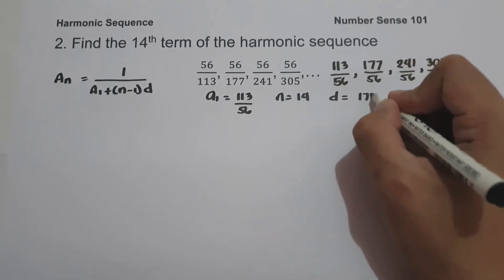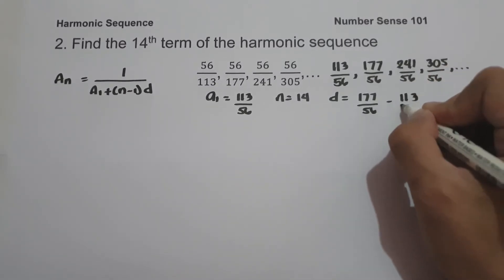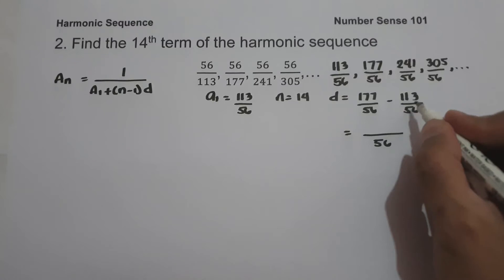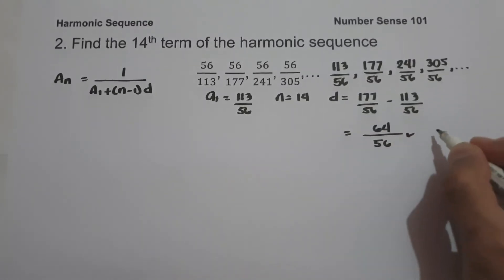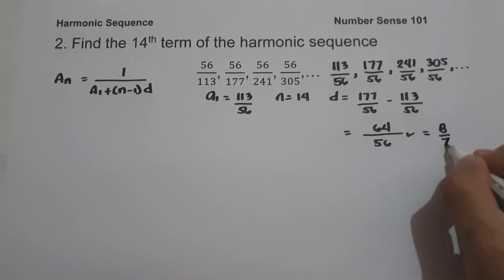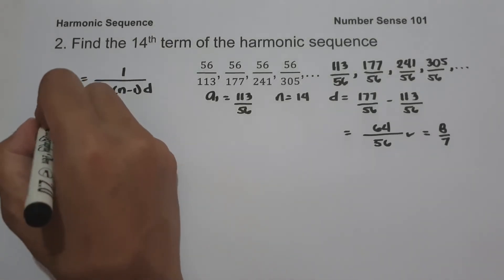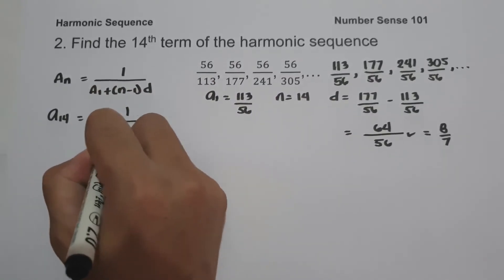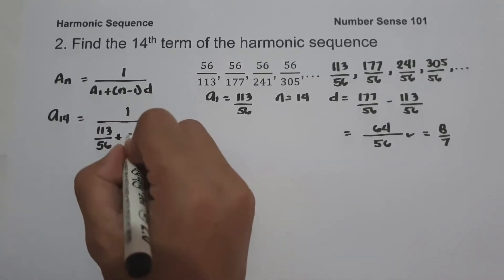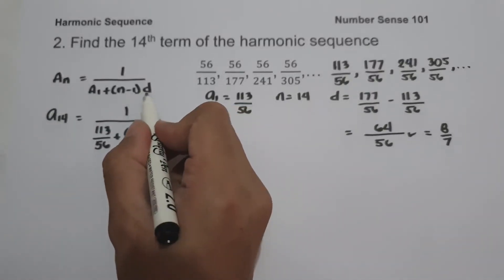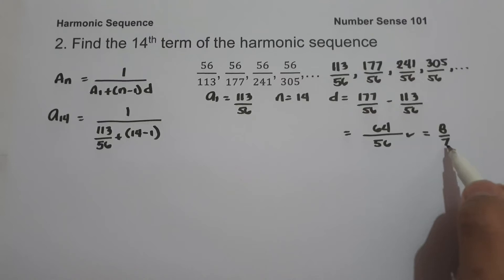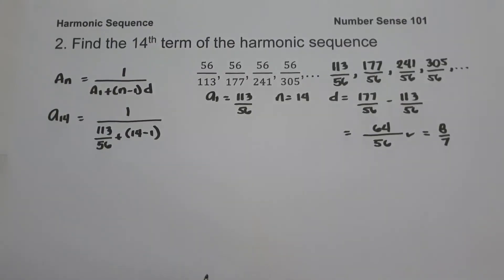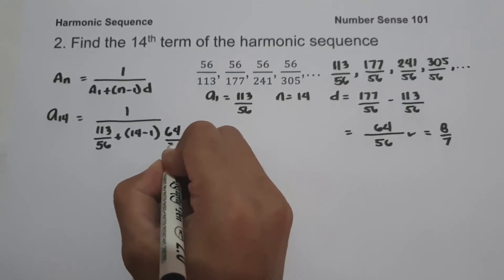The common difference is 177/56 minus 113/56, which gives 64/56, or simplified, 8/7. For our calculation, we write the common difference as 64/56 so that all terms share the same denominator of 56. So a sub 14 equals 1 over (113/56 plus (14 minus 1) times 64/56), which is 1 over (113/56 plus 13 times 64/56).